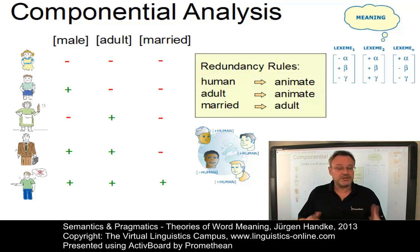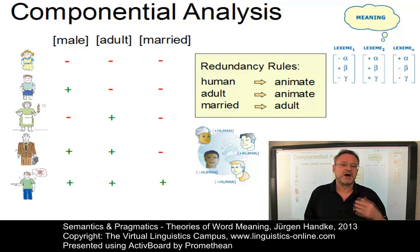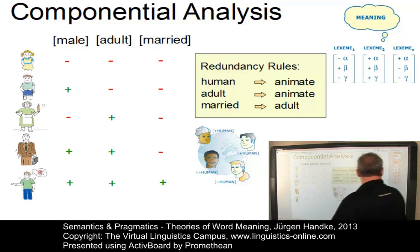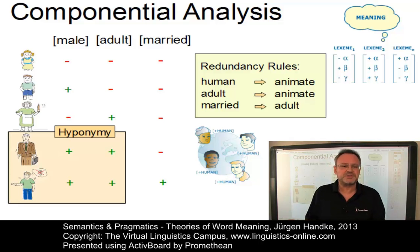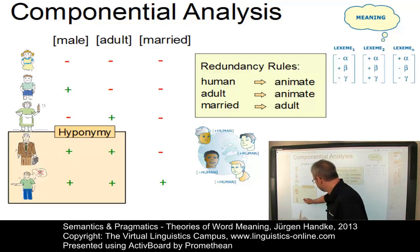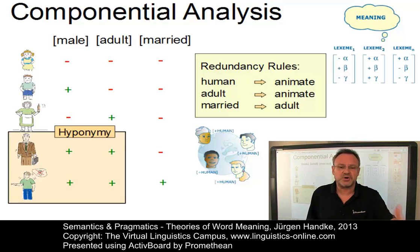The analysis of lexemes into meaning components not only allows us to formally define the conceptual sense of words, but also provides an economical means of representing sense relations like hyponymy and incompatibility. For example, a lexical item can be defined as a hyponym of another if its feature specification contains all the positive features of the other. Thus, 'bachelor' is a hyponym of 'man' because its feature specification contains all the positive features of 'man' and has one additional feature.